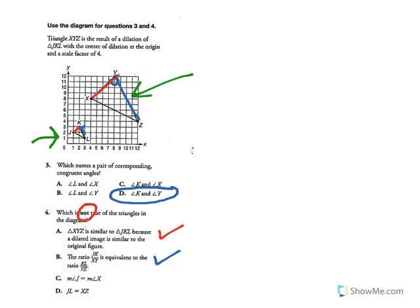Option C says angle J is equal to angle X — that's true because they're corresponding. Option D says side JL is equal to side XZ. These are not equal — equal means they're the same length, but one is big and one is small. Similar figures never have equal sides unless the scale factor is 1. So D is not true, and the answer is D.